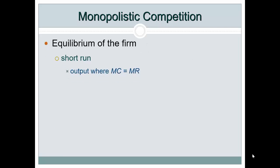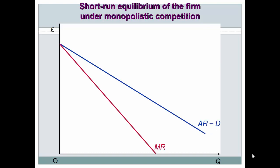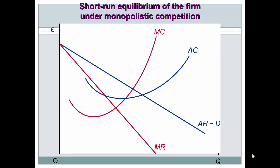Now let's look at the equilibrium of the monopolistically competing firm in the short run. As usual, output is determined at the point where marginal cost equals marginal revenue — that's the profit-maximizing point. A level of supernormal profit exists, but it depends on the demand curve's position and its elasticity. Average revenue is determined by the demand curve, marginal revenue is shown in red, the AC curve is U-shaped, and the MC curve crosses the bottom of the AC.